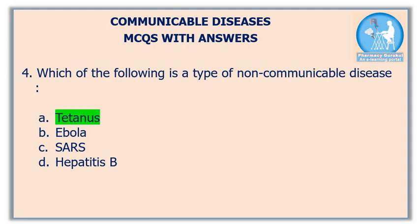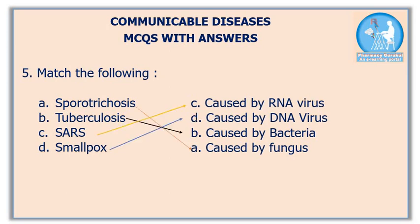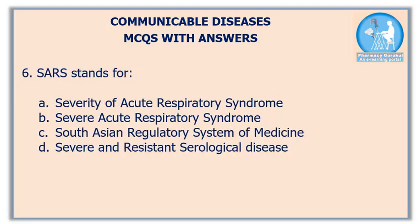Fifth question: match the options in the first column with their respective factors in the second column. Sporotrichosis is a fungal disease caused by fungus. Tuberculosis is a bacterial disease caused by bacteria. SARS is a viral disease caused by RNA virus. Smallpox is also a viral disease caused by DNA virus.